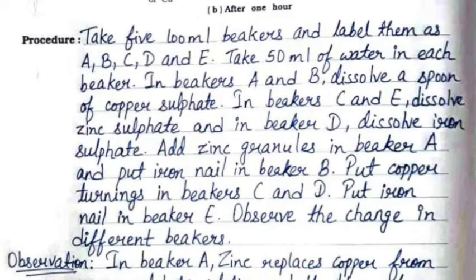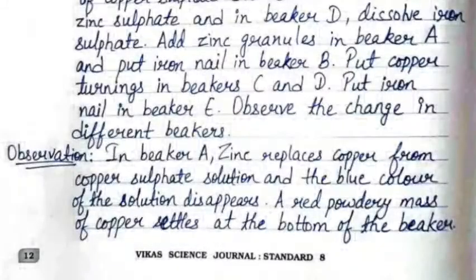Add zinc granules in beaker A and put an iron nail in beaker B. Put copper turnings in beakers C and D. Put an iron nail in beaker E. Then observe the changes in the different beakers.